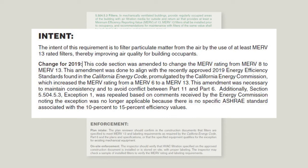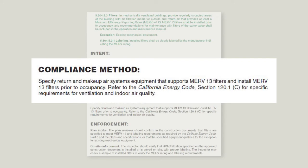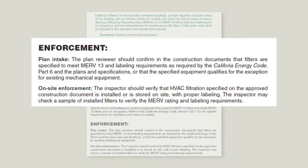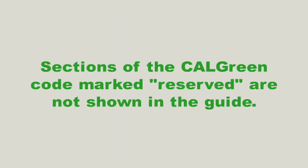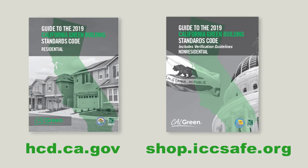If part of the code has changed, new code language or amendments made during the most recent code adoption cycle are identified. Compliance methods are presented, which may include design team information, suggestions, or examples. Enforcement recommendations for plan intake and on-site inspection are provided for plan reviewers and inspectors. Note that sections of the Cal Green Code marked RESERVED are not shown in the guide. The second Cal Green guidebook is published by the Department of Housing and Community Development and is intended to assist code users for residential applications. Both Cal Green guides can be viewed or purchased from the International Code Council's web store at shop.iccsafe.org.